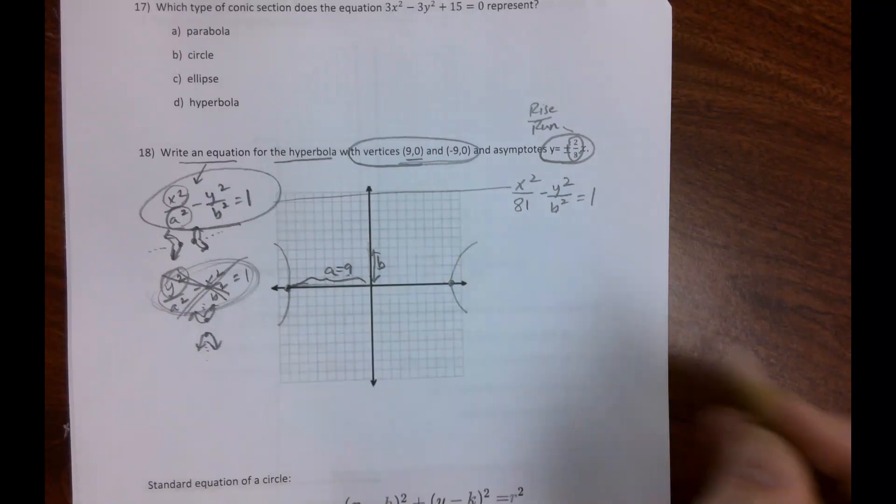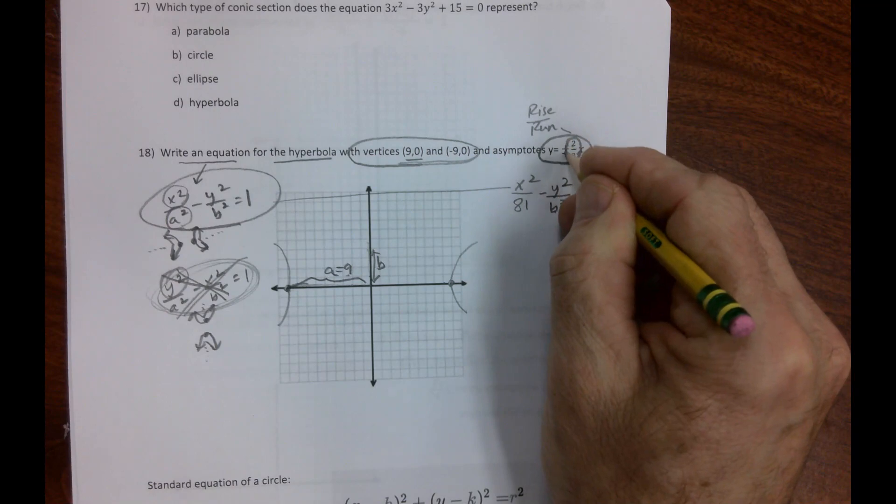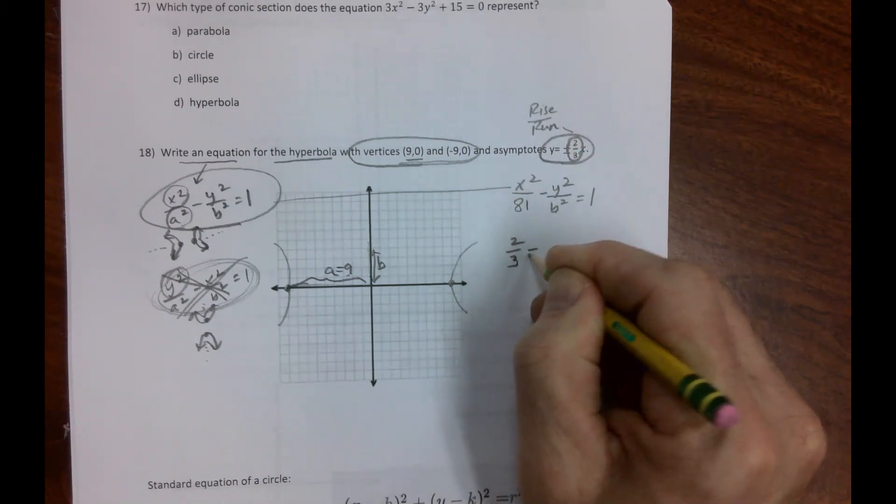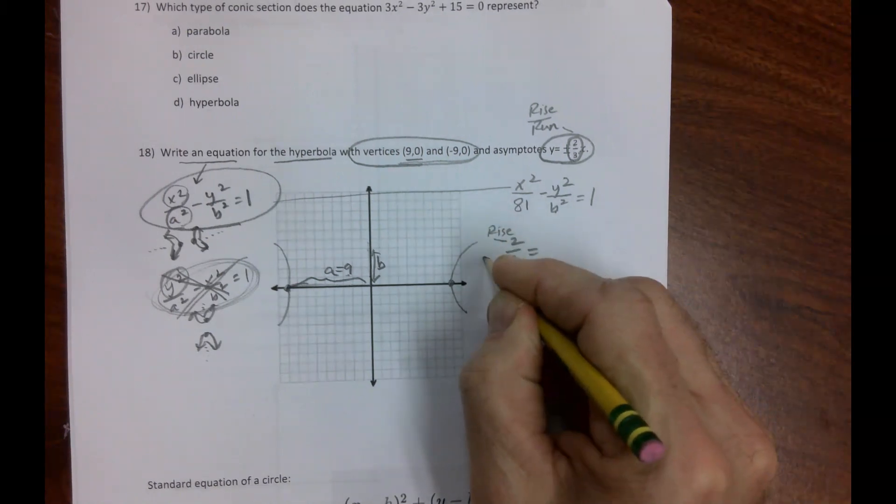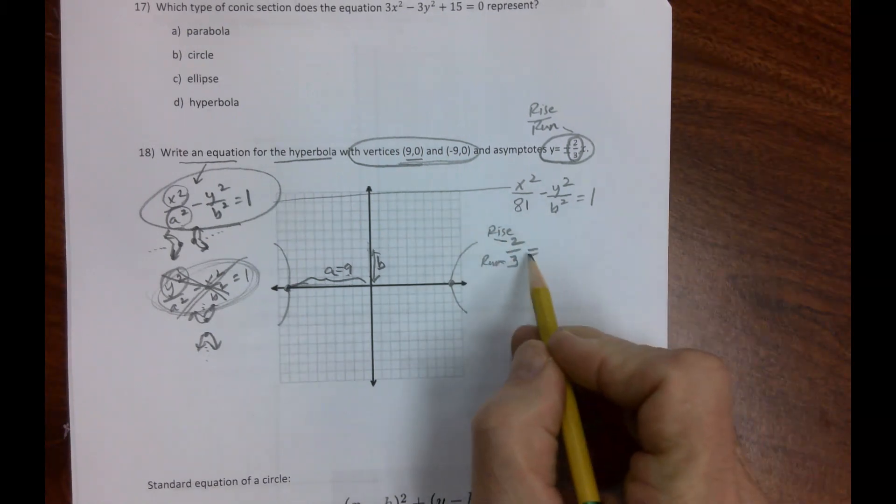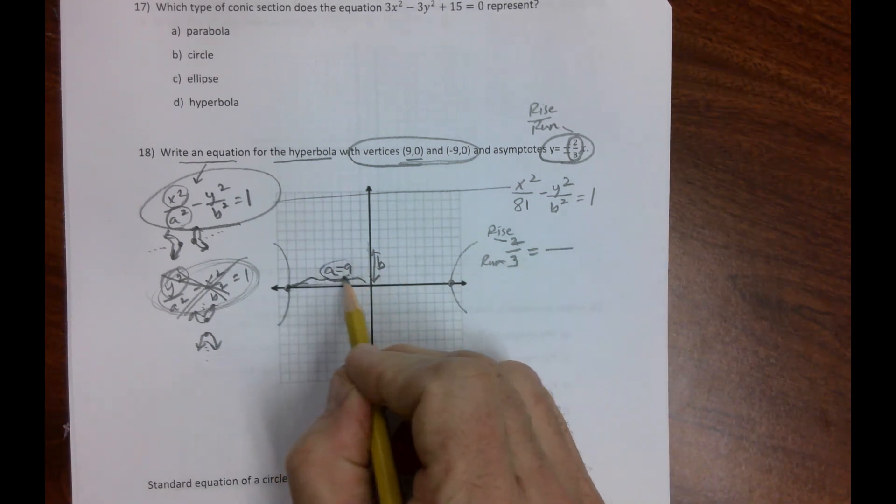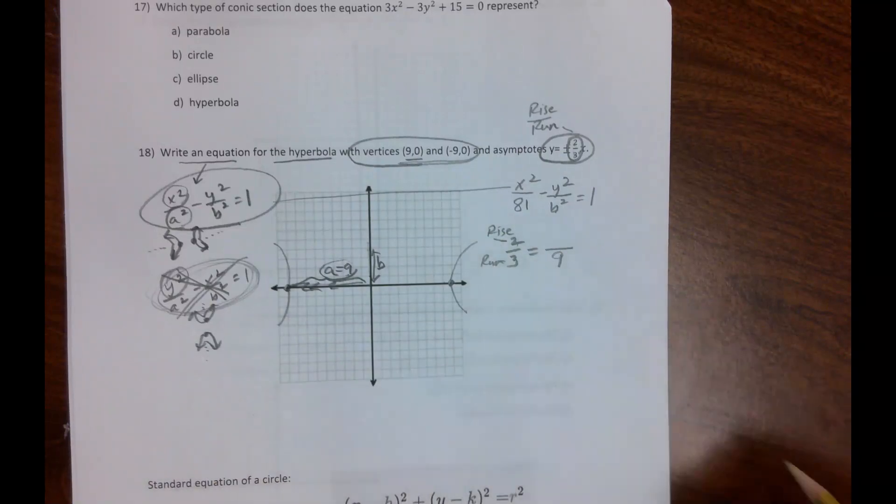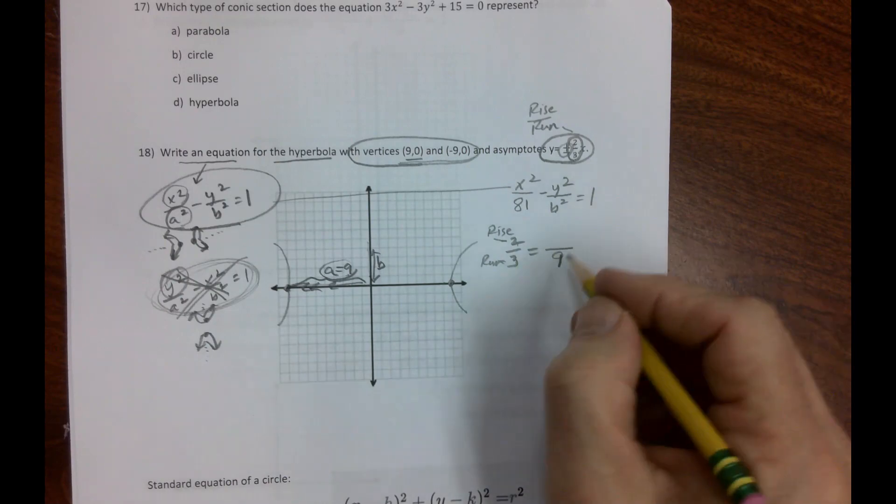That's going to be our b. Our b is the rise. Notice we have a fraction here: 2/3. In other words, our rise over our run is going to simplify to 2/3. Our run is 9.